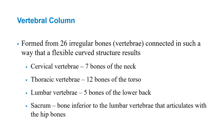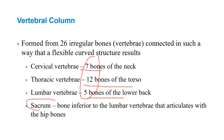The vertebral column is made up of 26 irregular bones — that includes the vertebrae, the sacrum, and the coccyx. We have seven cervical vertebrae, 12 thoracic, five lumbar, and the sacrum, which is fused vertebrae, as is the coccyx. The sacrum is considered one bone but is actually five fused bones, and the coccyx is fused four segments.